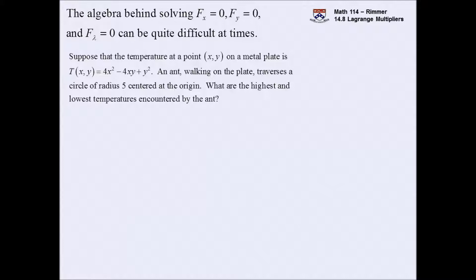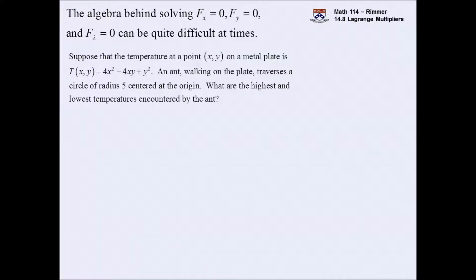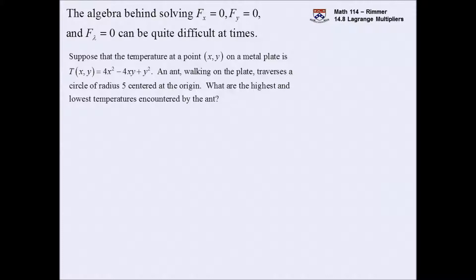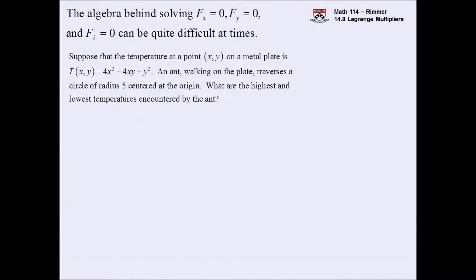There's a function and a constraint. Last time we had to dig it out - it was subtle the way they worded it. Here it's more obvious: the function is temperature, and the constraint is the fact that the ant is stuck on the track of being on a circle centered at the origin, but with a different radius this time - radius 5. So my lowercase f ends up as capital T.